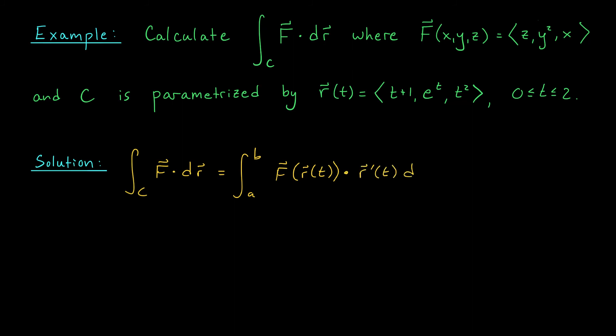Okay, it looks like we're going to need the derivative of R(t) again. And you can see here that my derivative should be <1, e^t, 2t>. And now we just plug things in. We get the integral from 0 to 2 of F(R(t)). So my z term is going to become t². My y² term is going to become e^(2t). And my x term is going to become t+1. I take the dot product with my derivative vector <1, e^t, 2t> dt.